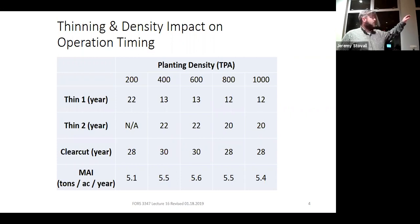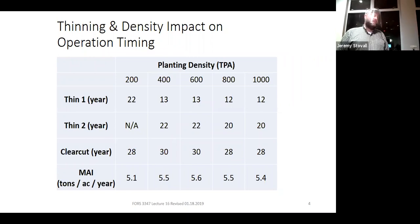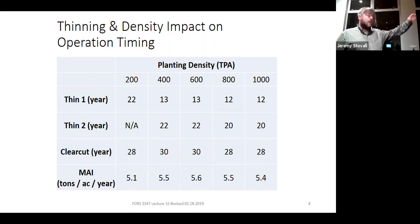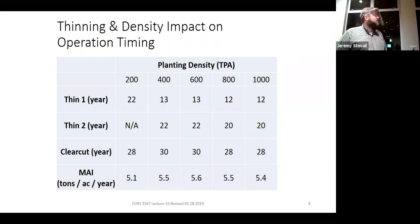I ran a two-thinning rotation and then clear-cut it using realistic timing and mean annual increment to schedule it out. The 200 trees-per-acre plantation included no second thin because it didn't make sense—it never got to a high enough basal area to thin again. But regardless of planting density other than that extreme 200 TPA example, you end up targeting a first thin at about age 12 or 13, a second thin at about age 20 or 22, and a clear cut at around age 28 to 30.